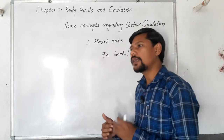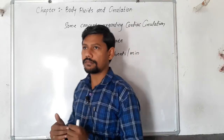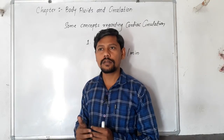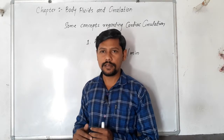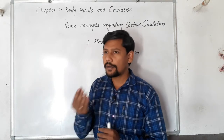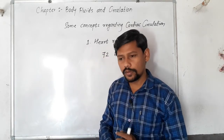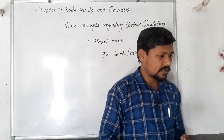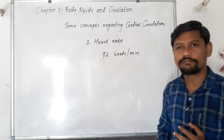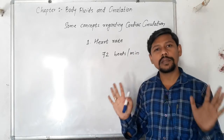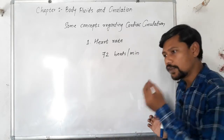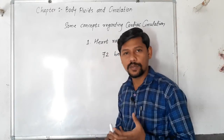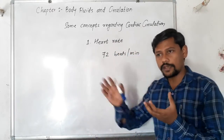Depending on the body state — if we are in a sleeping position, the heart rate can reduce during sleep. So the heart rate is a bit less. If we are in a sleeping position, it can be reduced below 72 beats per minute. The heart rate is variable.